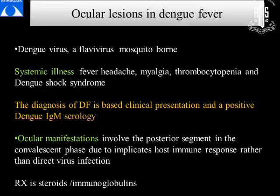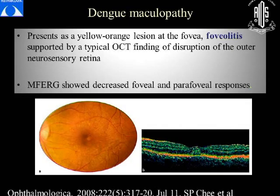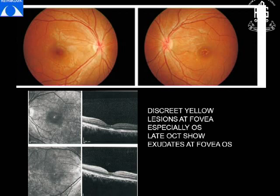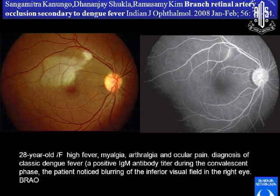Coming to dengue, it is a flavivirus, also mosquito-borne. Patients have headache, myalgia, thrombocytopenia, and dengue shock syndrome, and diagnosis is based on positive dengue serology. Ocular manifestations usually occur in the convalescent phase and are more of an immunological response rather than direct infection; treatment is mostly steroids and immunoglobulins. Patients typically present with orange-yellow lesions at the fovea — a foveolitis — supported by typical OCT findings of disruption of the outer neurosensory retina and multifocal ERG showing decreased foveal and parafoveal responses, first described by Dr. Chee et al. From India, there is a report of a 24-year-old patient with dengue IgM-positive thrombocytopenia and bilateral loss of vision after hospital discharge, with typical dengue maculopathy. Studies from India have also shown that dengue patients could present with branched retinal artery-like occlusion, mostly in the convalescent phase.